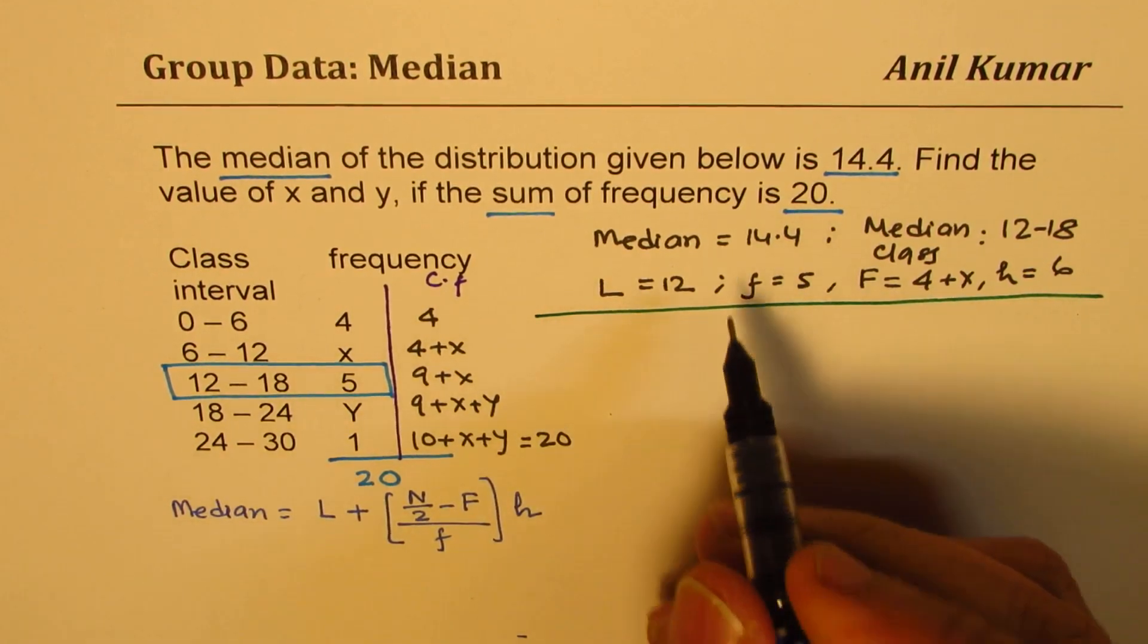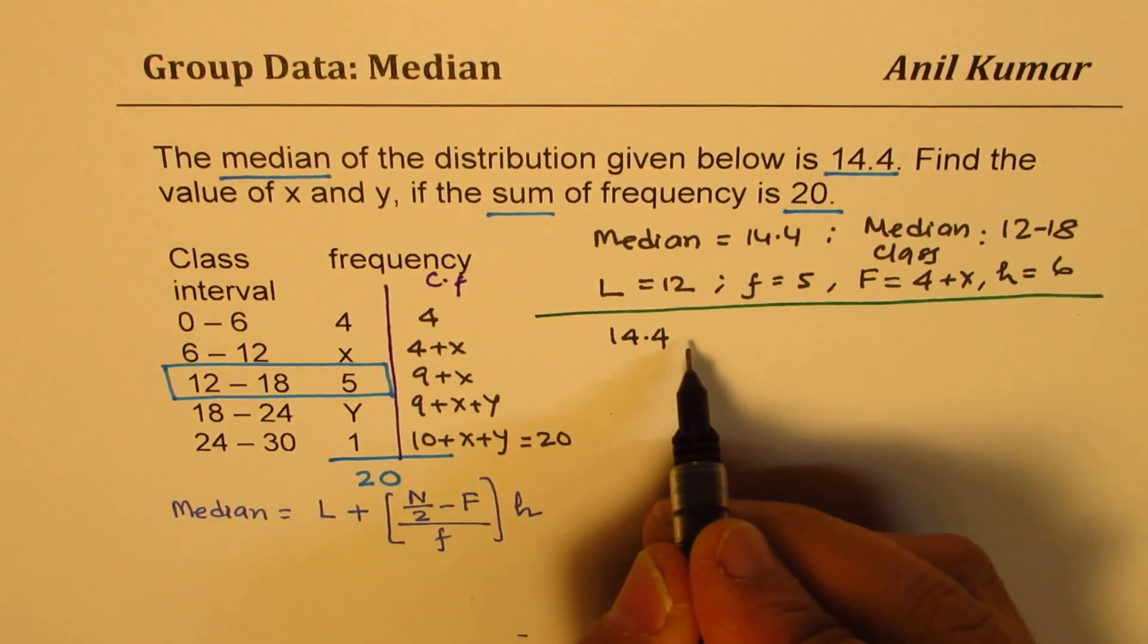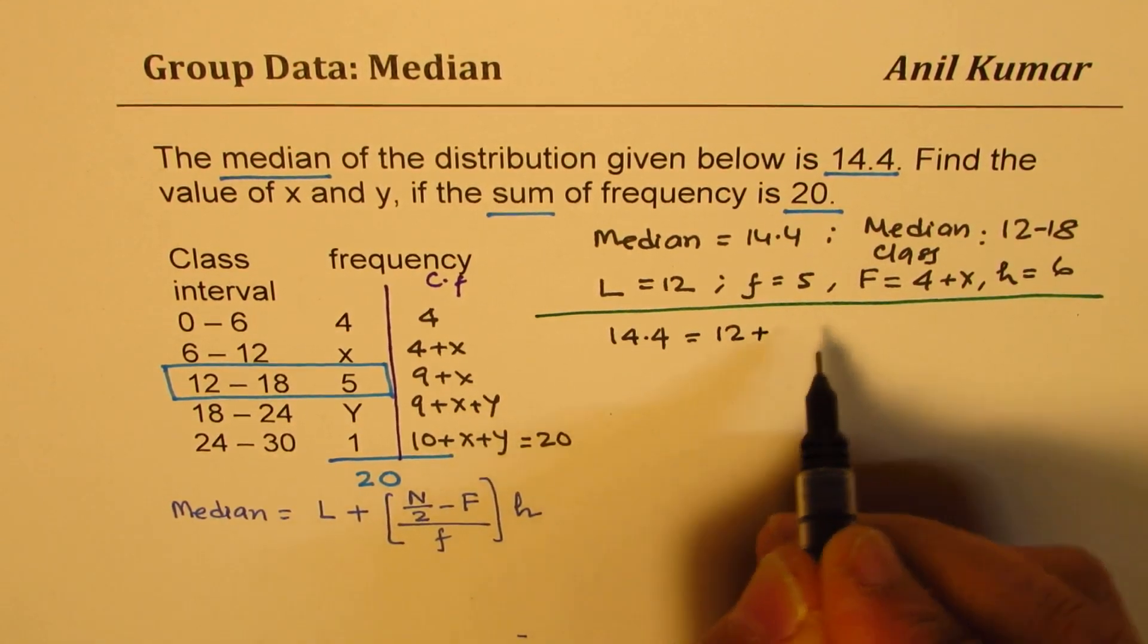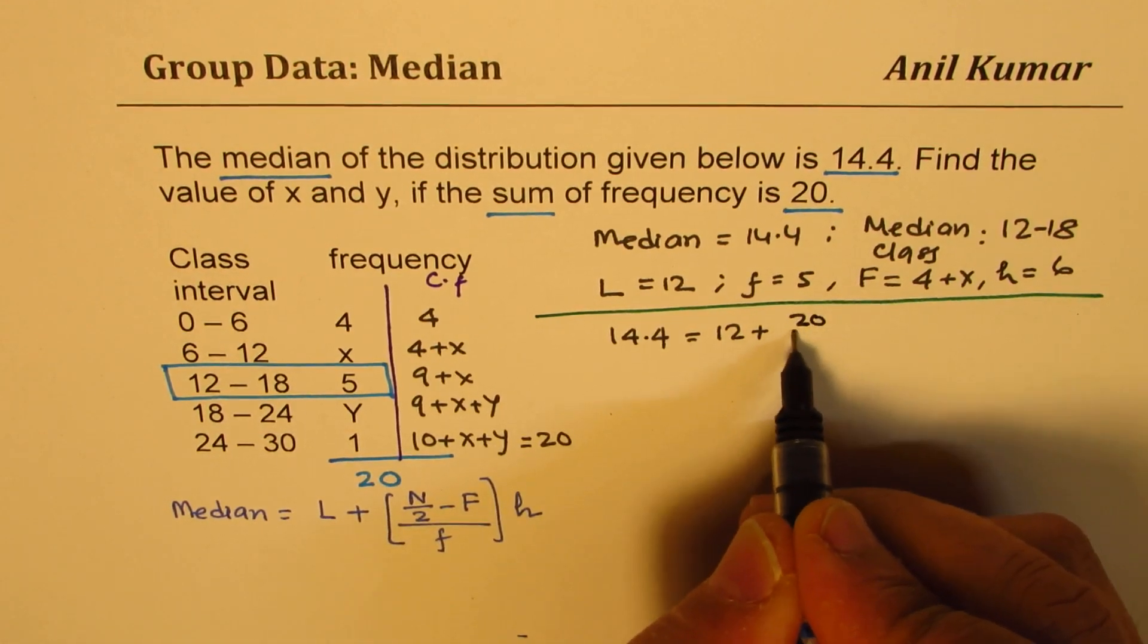So let's substitute. We get 14.4 for median, so that is the formula I'm using. Equals 12 plus, n is 20, so we'll write 20 over 2.